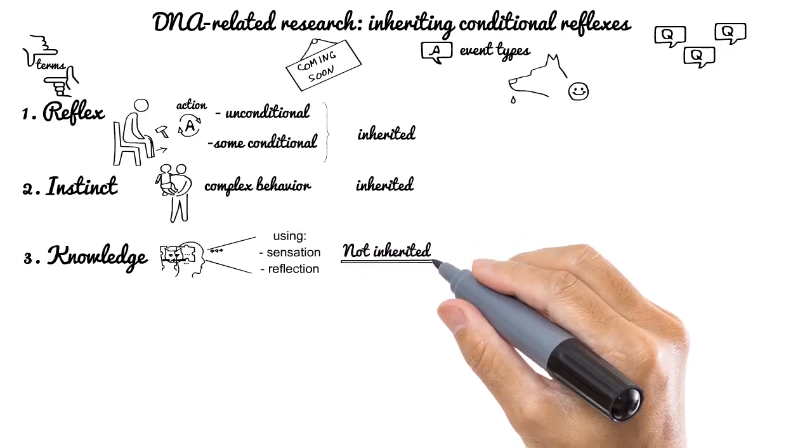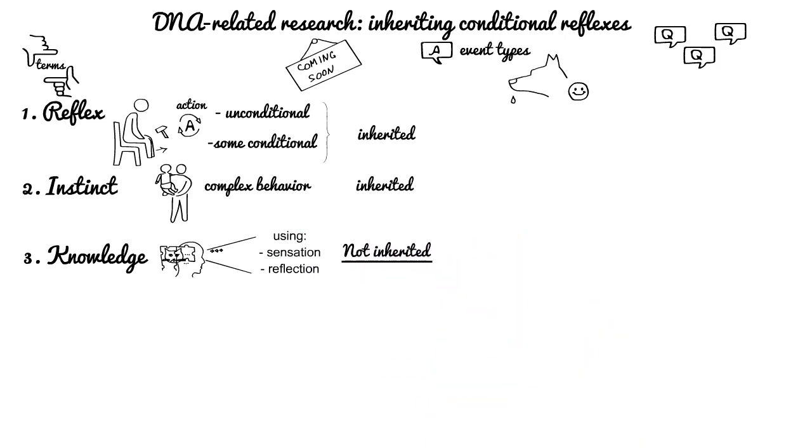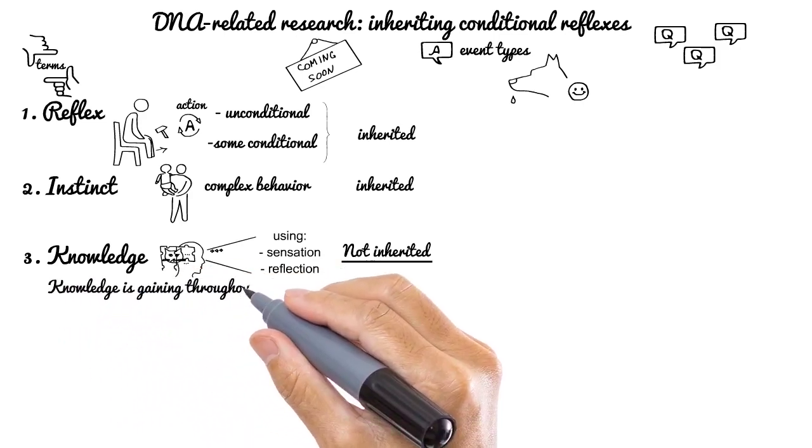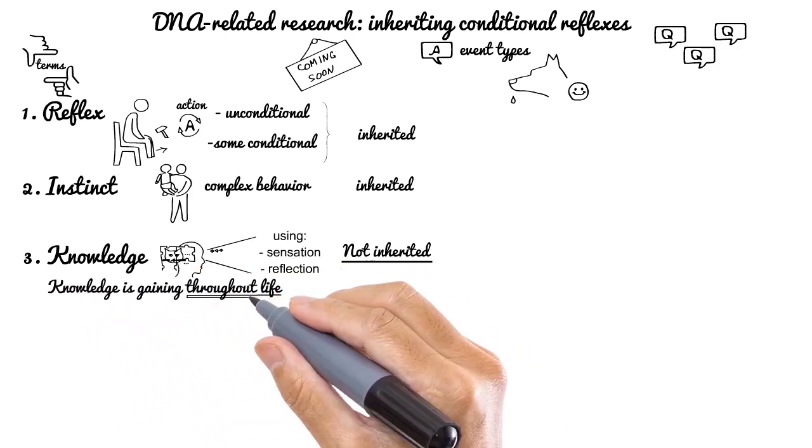If you could find some scientific researches, within definitions describing this video, which can provide evidence and proof that knowledge can be inherited, please share with us. I would be happy to update this video, but I haven't heard about it as of yet. So let's consider that knowledge is gaining throughout a particular person's life as a result of his cognition.